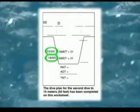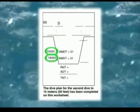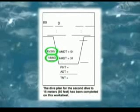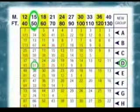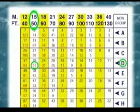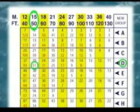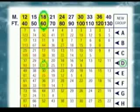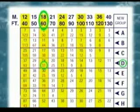To plan a repetitive dive, you use the NAUI planning worksheet as you did for your first dive. However, you must use table three to find your AMDT when planning your dive. Don't forget to add three meters to your depth and record that AMDT.